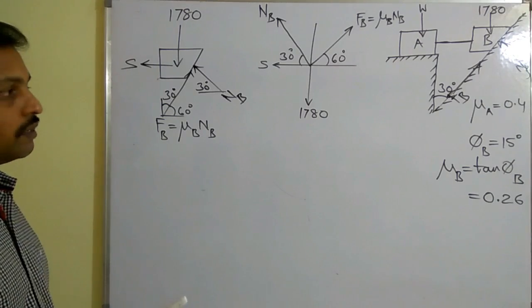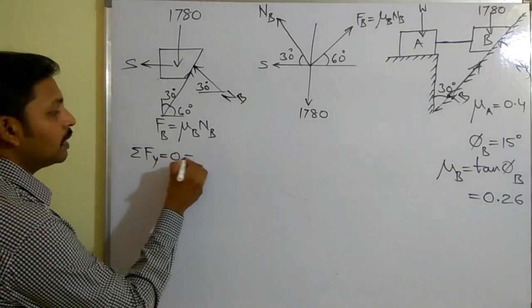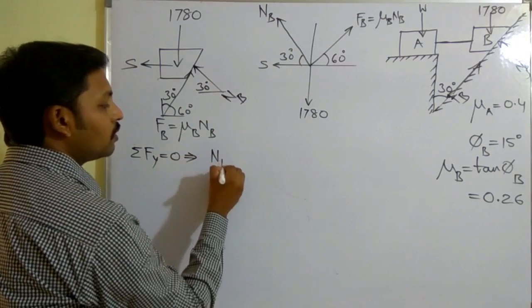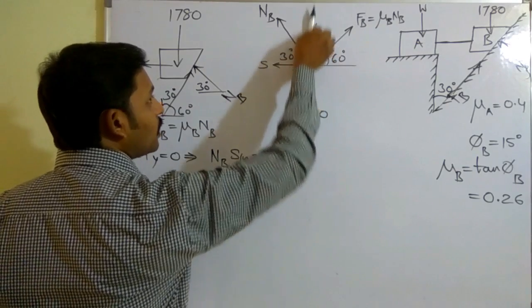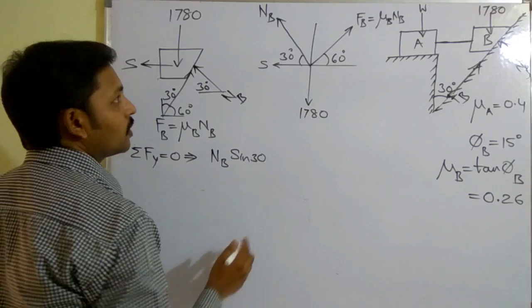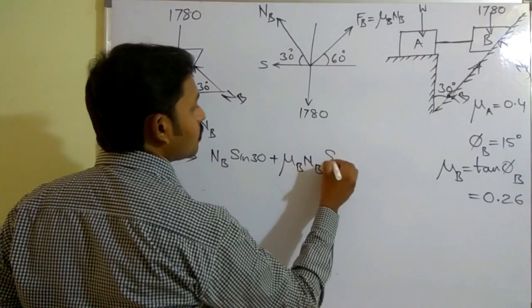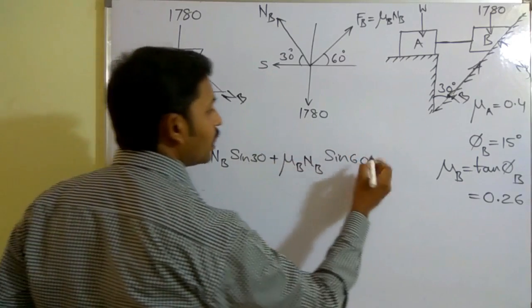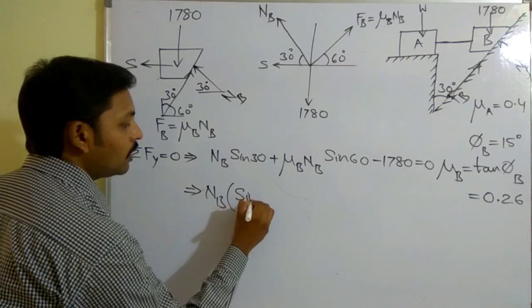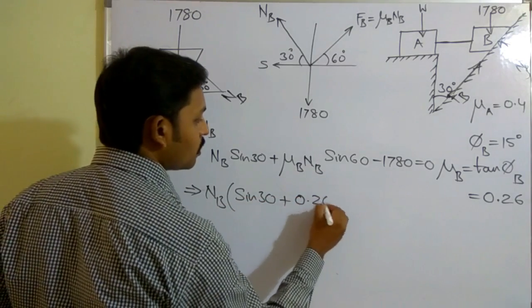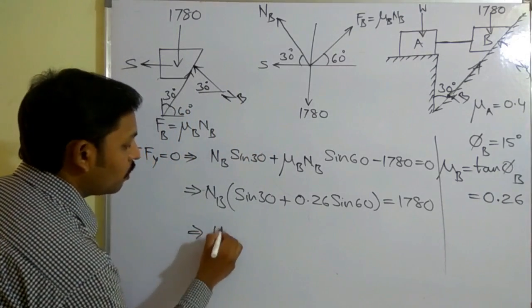Now apply Σfy = 0. The vertical component of N_b is N_b sin(30°) acting in the positive y-direction. The vertical component of the friction force is μ_b × N_b × sin(60°). The weight 1780 N acts downward. So the equation is: N_b(sin 30° + μ_b sin 60°) = 1780. With μ_b = 0.26, this gives N_b × (sin 30° + 0.26 sin 60°) = 1780.